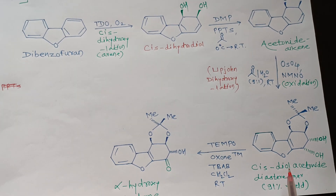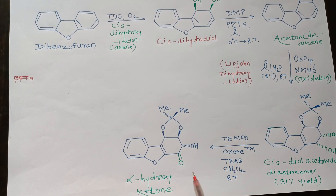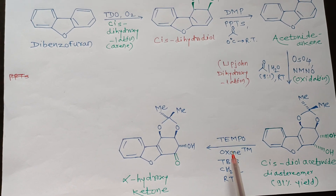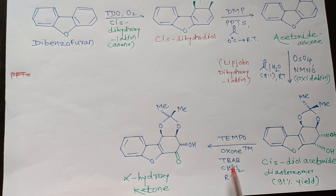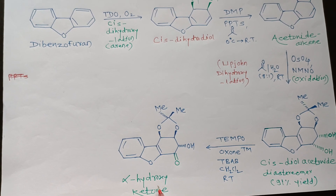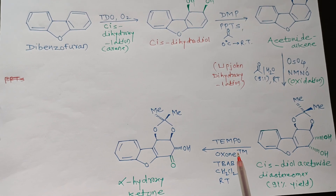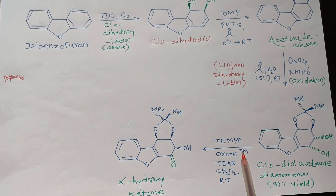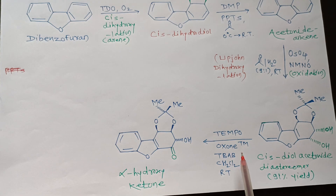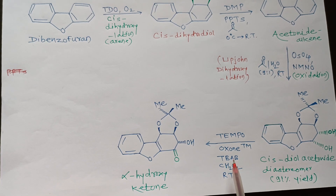Then chemoselective oxidation of the cis-diol acetonide compound into an alpha-hydroxy ketone was achieved using Oxone™ as an oxidizing reagent in the presence of TEMPO and also TBAP, a phase transfer catalyst. So the cis-diol is converted into the alpha-hydroxy ketone. TEMPO refers to 2,2,6,6-tetramethylpiperidine-1-oxyl, a radical initiator. Oxone refers to potassium peroxymonosulfate as an oxidizing agent.